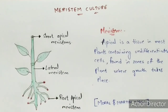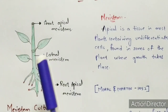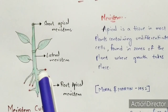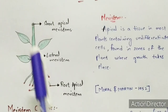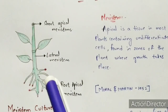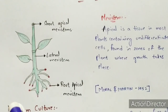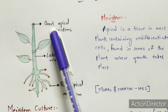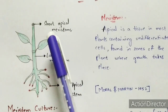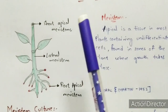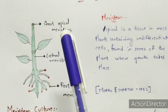Now let us discuss meristem culture. The shoot apical meristem will be extracted and will undergo a culturing process. When it undergoes the culturing process, the final product formed will be a plantlet, and that plantlet will be free of virus. That is the phenomenon of meristem culture.